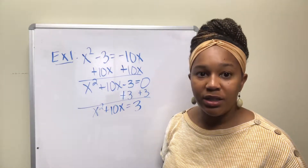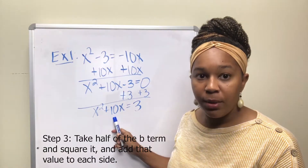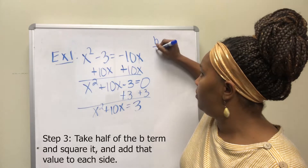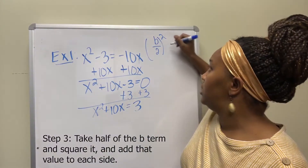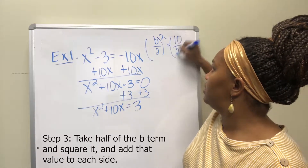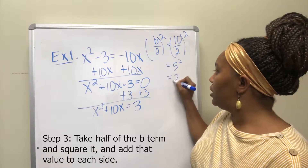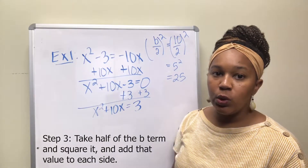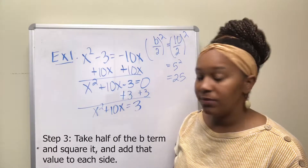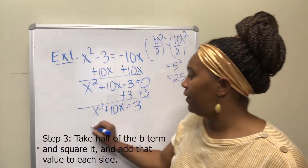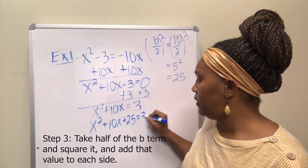Step three is where you actually complete your square — you create the perfect square. You do that by taking half of the b term and squaring it. In this case b is 10. So you take half of 10, which is 5, and square it to get 25. We take that result and add it to both sides of the equation.